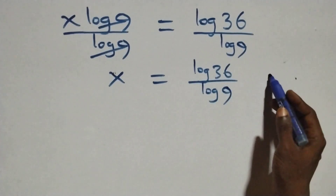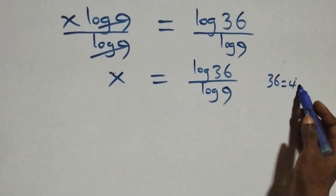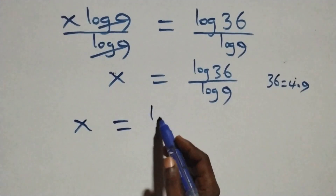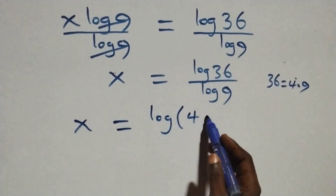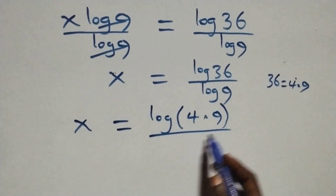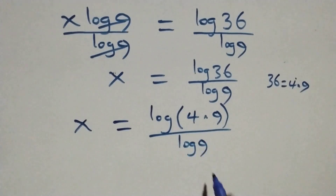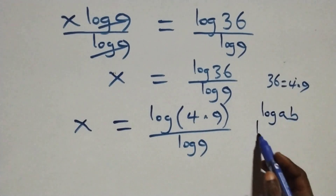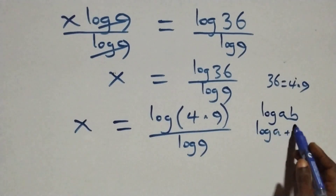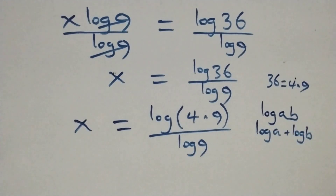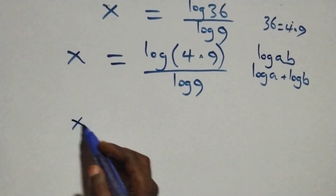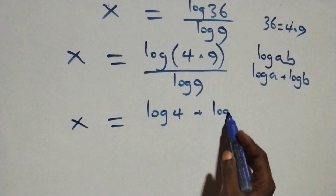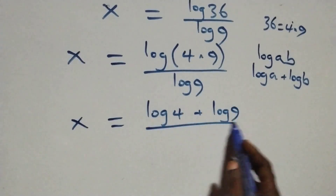Here we can express 36 as 4 times 9, so all we have becomes x equals log of 4 times 9, over log 9. Then this follows from the product law of logarithms, so all we have becomes x equals log 4 plus log 9, all over log 9.